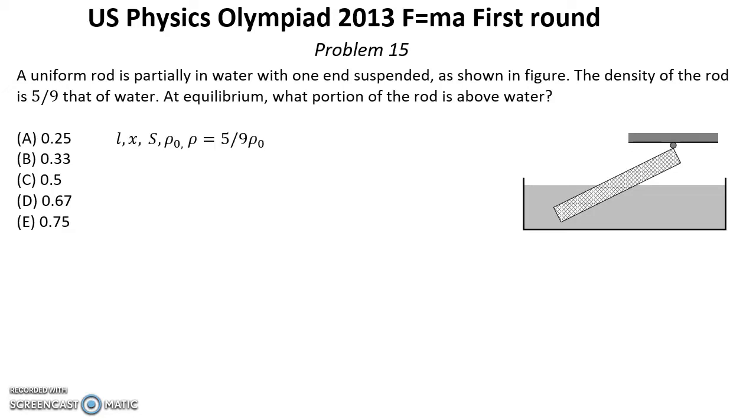Let L be the length of this rod. X is part of this rod above the water. S is cross sectional area of this rod. Rho 0 is density of water. Rho equals 5 over 9 rho 0 is density of this rod. And we have to find what is X, part of the rod above the water. Also let theta be the angle between the direction of this rod and the horizontal.